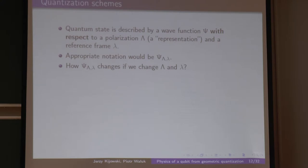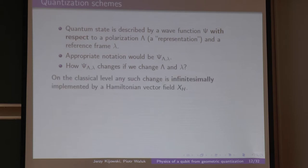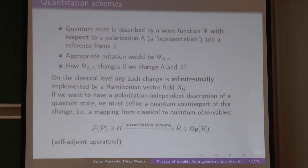The main problem is: are we able to define how the quantum state transforms when we change both the representation and the reference frame? If we only change the reference, we already know how. But if we change the foliation, it is a hard job. Infinitesimally, each change of the foliation can be implemented by a Hamiltonian vector field, and if we want a polarization-independent description, we must define a quantum counterpart of this change.